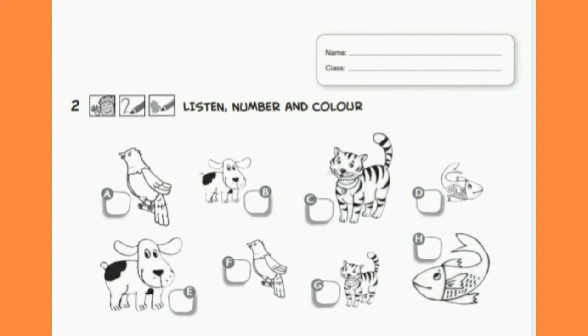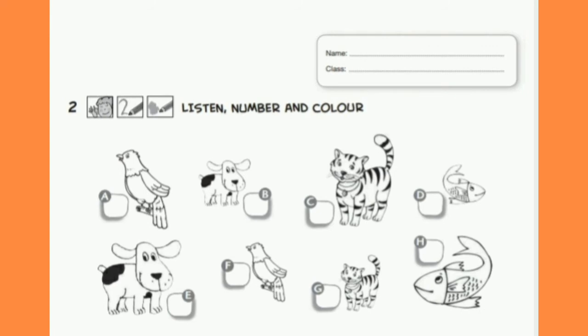The big fish is violet. The small cat is blue. The small bird is yellow. The small dog is brown. The big cat is orange. The small fish is pink. The big bird is violet and red.